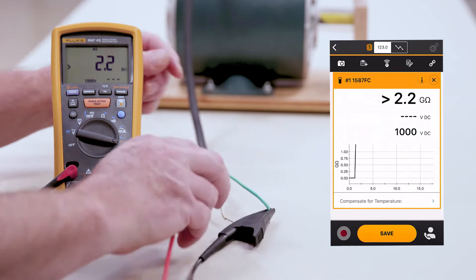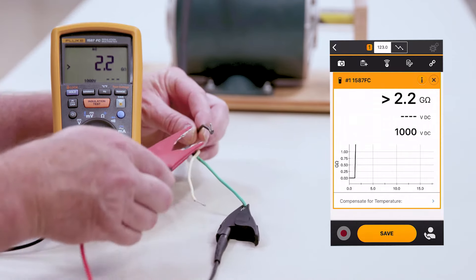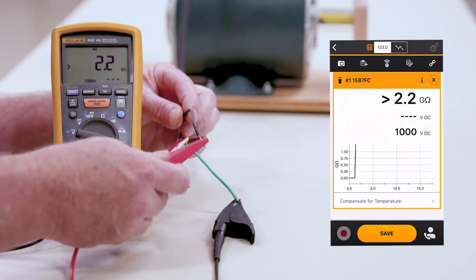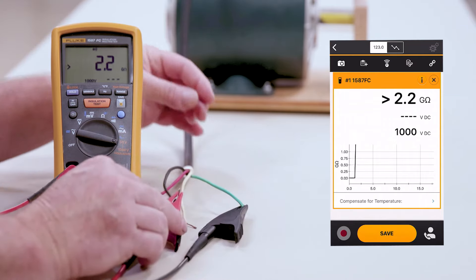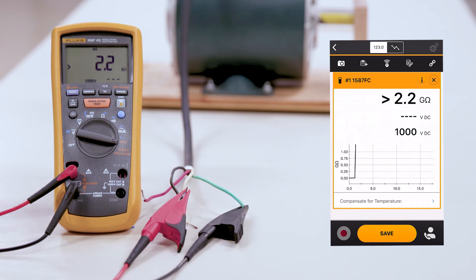We're going to change the next leg by going to the black leg, as you can see here. Again, by hitting the Test button, we can perform the test.